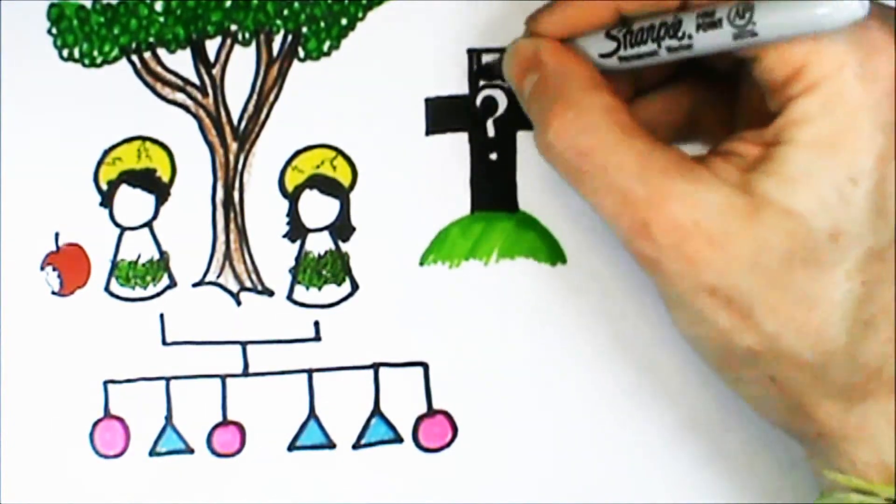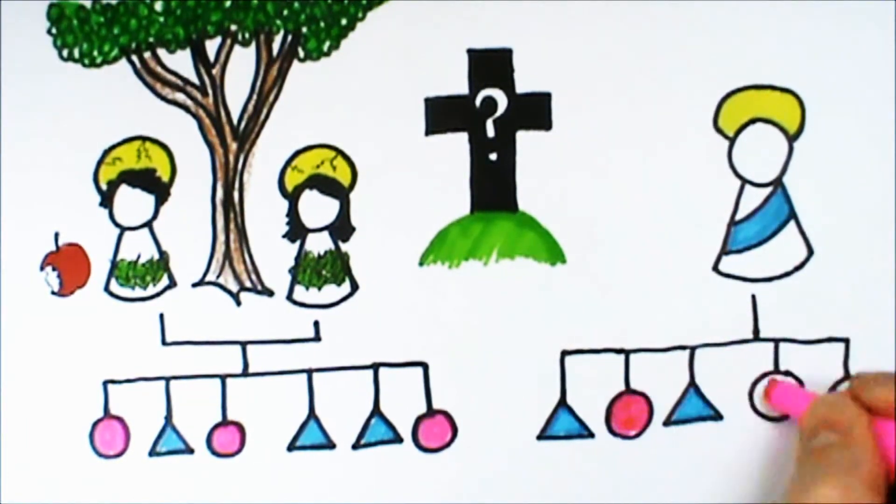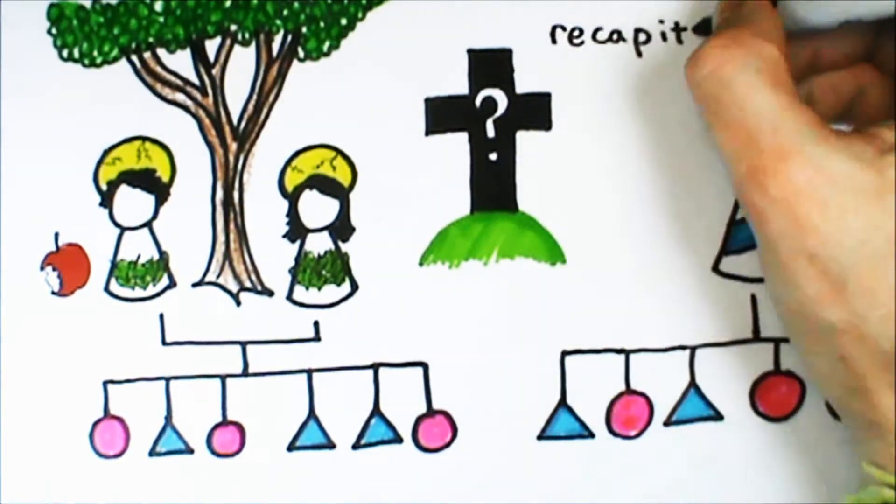In this theory of the atonement, the cross is the place where our old, tainted human nature dies, and our new human nature is summed up, or recapitulated, in Jesus.